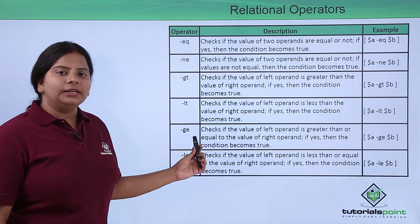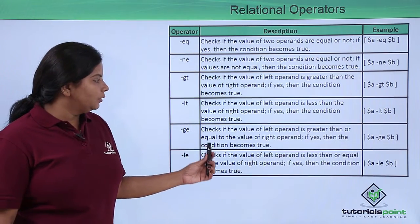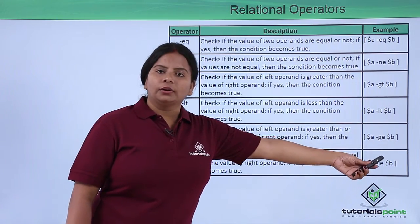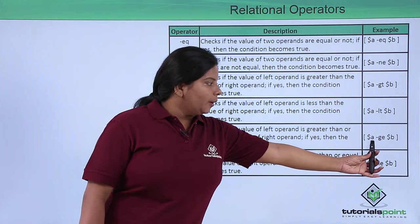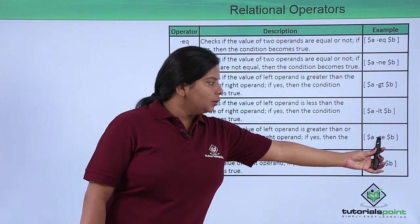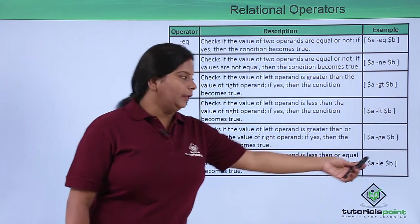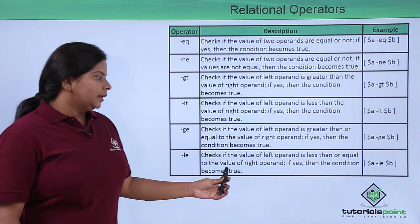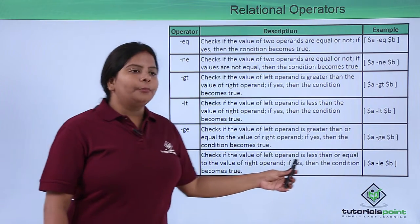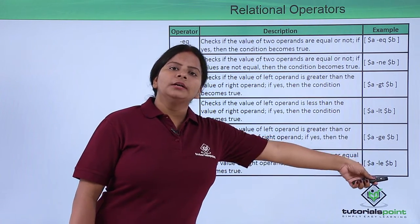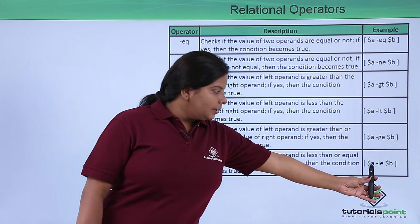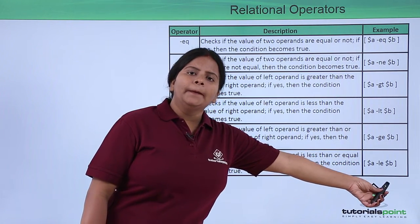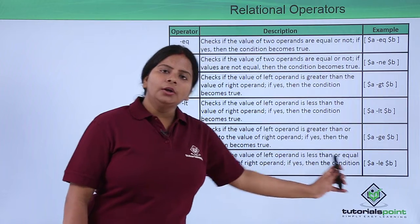Next we have -ge, which checks greater than or equal to. So that condition is provided by a -ge b. Then we have -le, which checks whether the left operand is less than or equal to the right operand — so variable a is less than or equal to b.